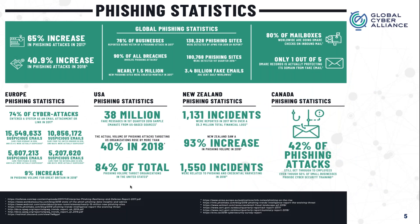Here are some phishing statistics at a global level. Keywords to note are 'increase' — a 65% increase in phishing attacks in 2017, and a 40.9% increase in 2018. In 2019 it was about the same or slightly higher, and in 2020 there's definitely much more of an increase because of global events.